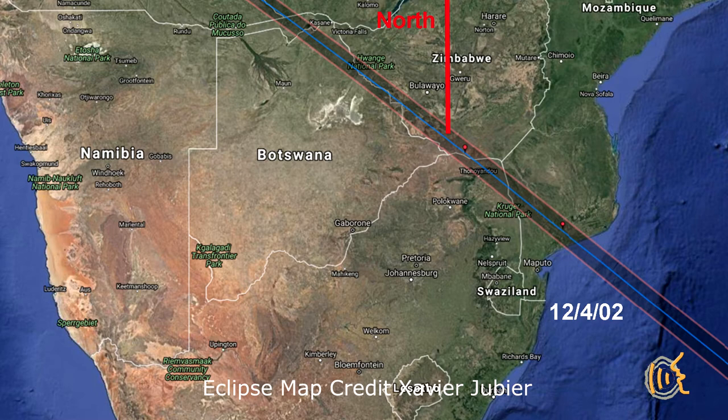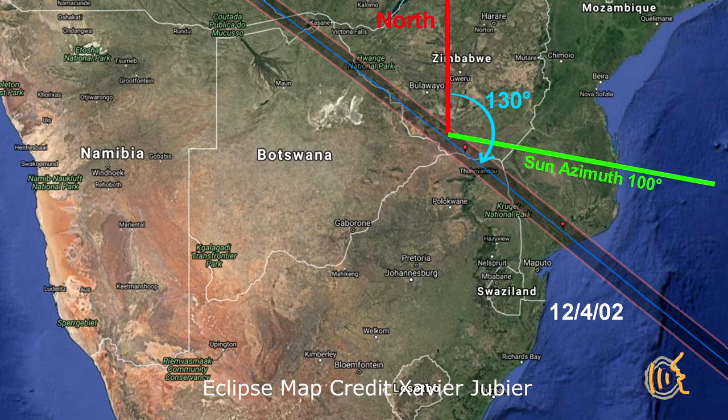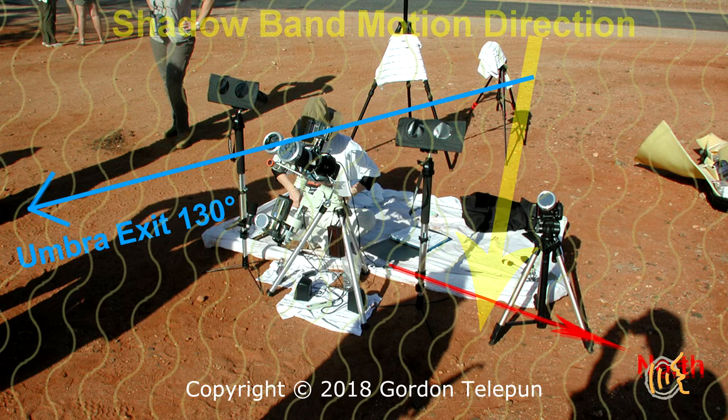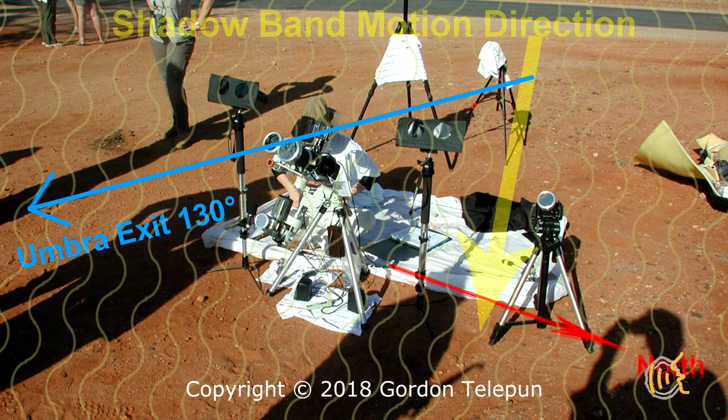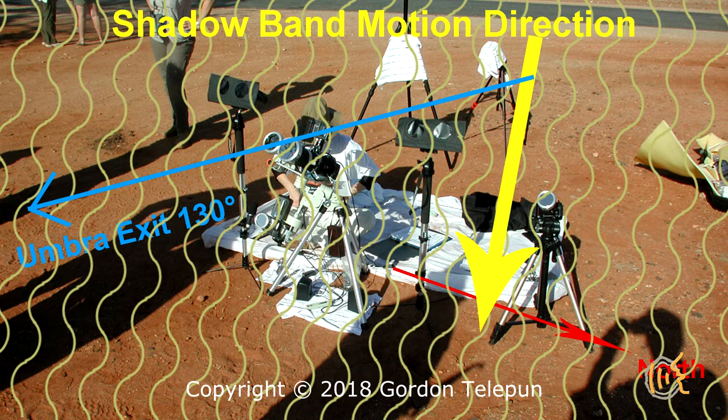To prepare to document shadow bands during the 2017 eclipse, I knew I had to analyze my observations from 2002. I used the interactive eclipse map for that eclipse combined with my site videos to recreate the observation. The angle of the path exit was about 130 degrees, the sun azimuth was about 100 degrees, and I remember the row movement direction was a bit to my left, making that direction about 90 degrees. I wondered about all of these interrelationships: the path angle, the sun azimuth, the sun altitude, and the atmospheric effects. Is there a link to the path direction? I wanted to try to advance the understanding of shadow bands.